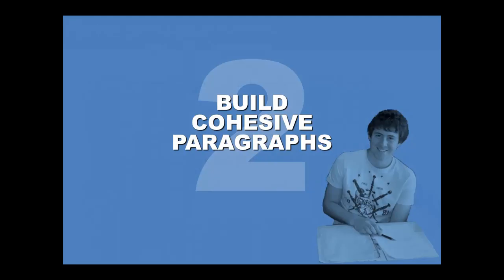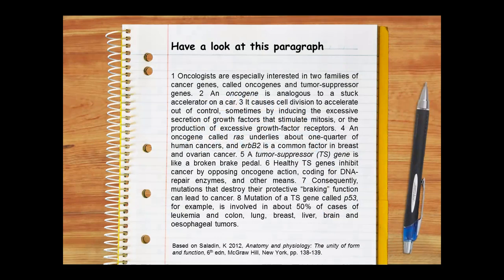Good writers ensure their paragraphs are cohesive, which means their paragraphs feel tight, their ideas seem to belong together, and their writing just flows. Let's explore how they do this by taking a look at a cohesive paragraph based on one in which Kenneth Saladin discusses two types of cancer genes. Pause this video while you read this paragraph, then we'll look at what makes it cohesive.